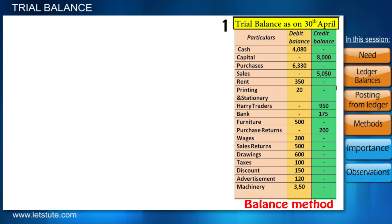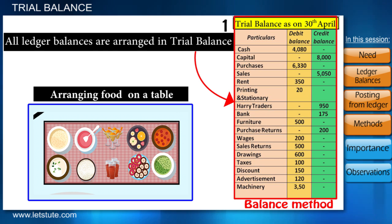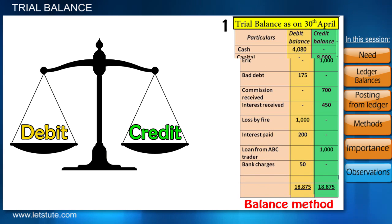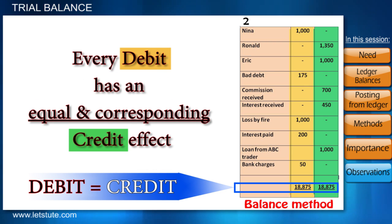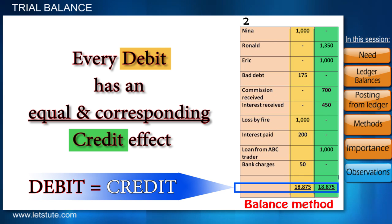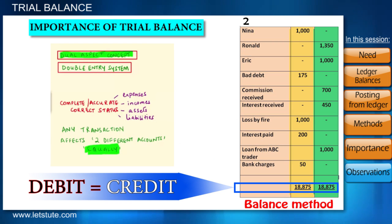This is how we got all our ledger account balances onto one sheet — like getting all the scattered dishes onto one table. Once this trial balance is made, the final total of debits must equal the credits, as every debit has an equal and corresponding credit effect in our records. If debits equal credits, we say the trial balance has been tallied. This acts as proof that the double entry system has been followed in each entry.